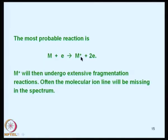When we come to the ion source, samples that are sufficiently volatile may be ionized either by electron impact or by chemical ionization. The electron impact technique uses a heated tungsten filament emitting electrons, which are accelerated by applying a potential difference of about 70 volts. The kinetic energy of the electrons equals 70 electron volts, which is sufficient to ionize most organic molecules. The most probable reaction is: M + e⁻ → M⁺ + 2e⁻; M⁺ then undergoes extensive fragmentation reactions. Often the molecular ion line will be missing in the spectrum.